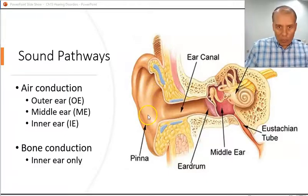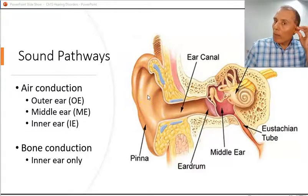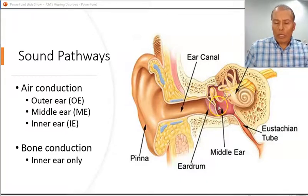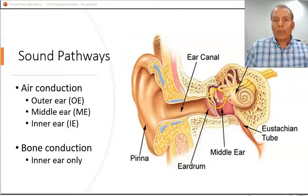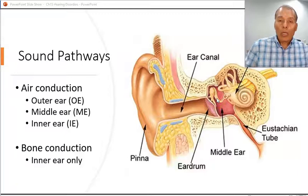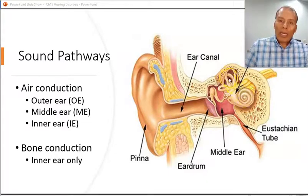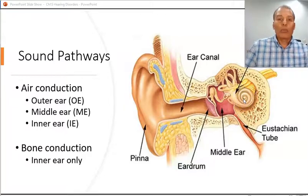The peripheral system consists of the outer ear — that is the pinna and the ear canal, known as the external auditory meatus. The middle ear is the little chamber between the eardrum and the cochlea; it has air inside and three little bones called the ossicles — the malleus, the incus, and the stapes. The inner ear is made of the cochlea and the vestibular system. The vestibular system is responsible for balance, and the cochlea is responsible for sound transmission and processing.